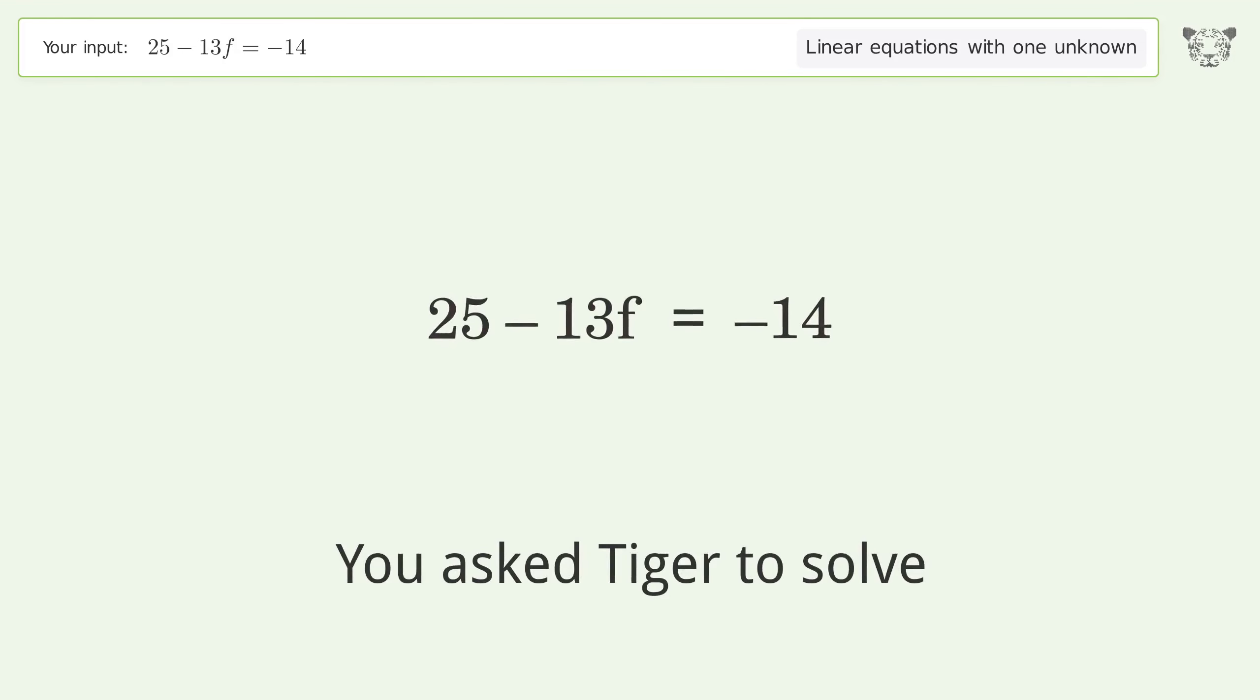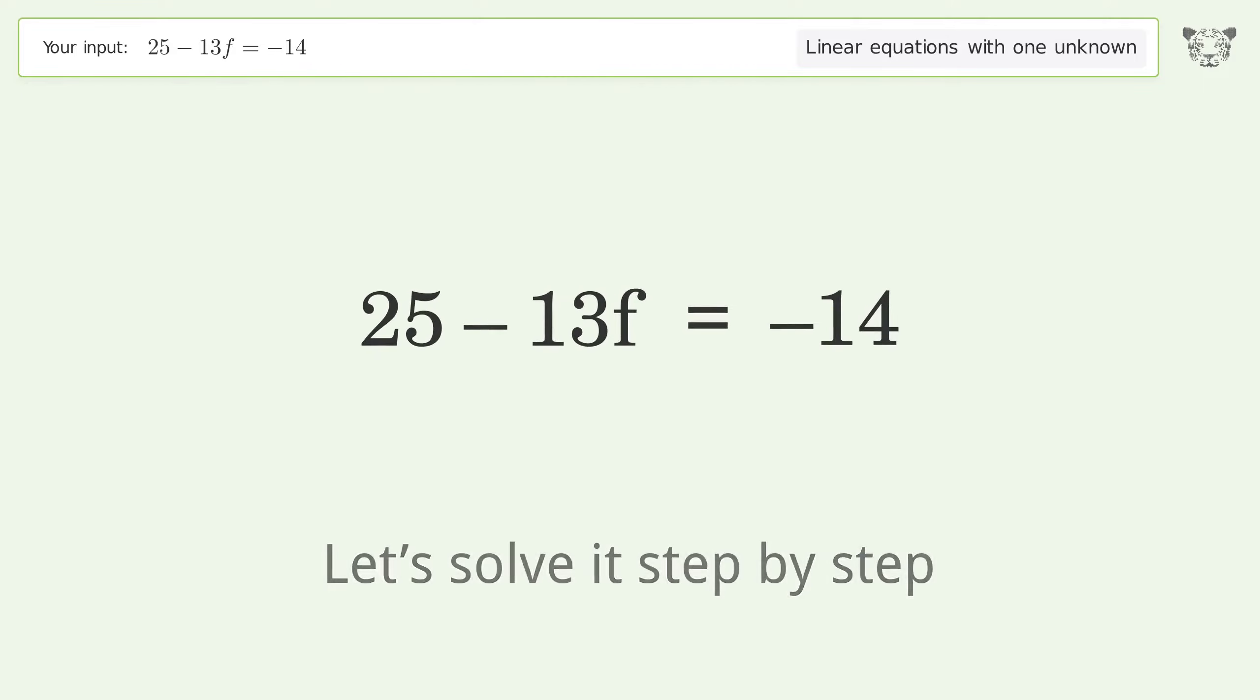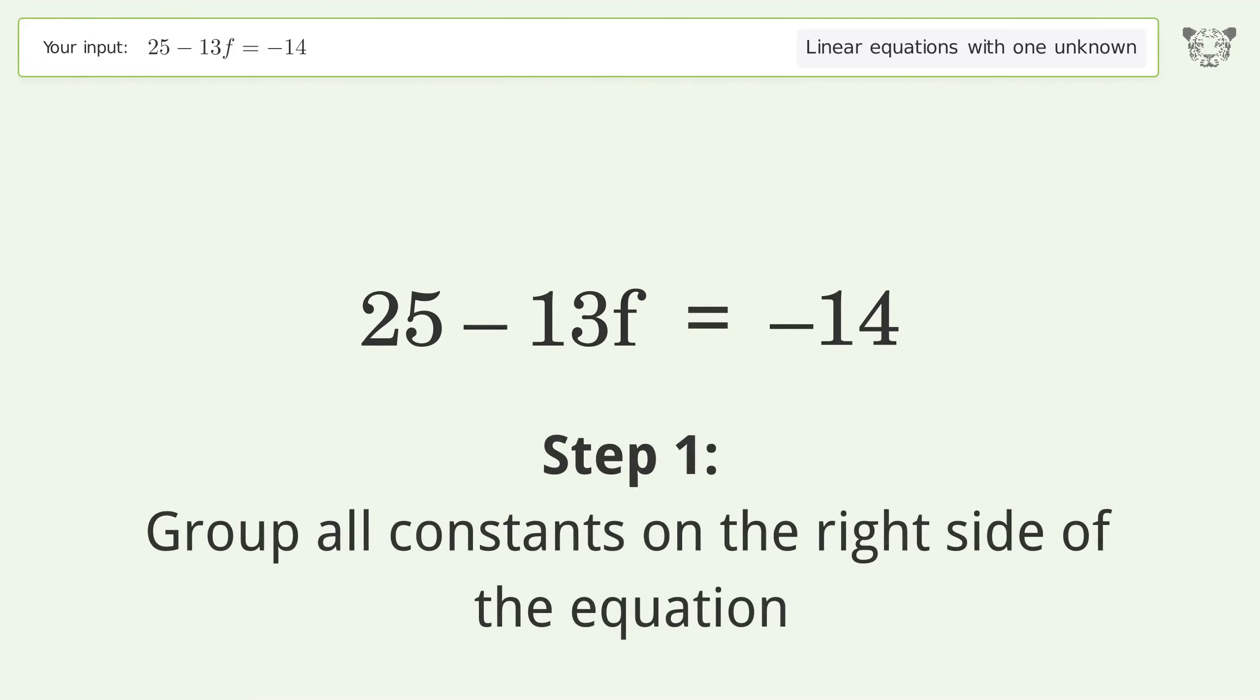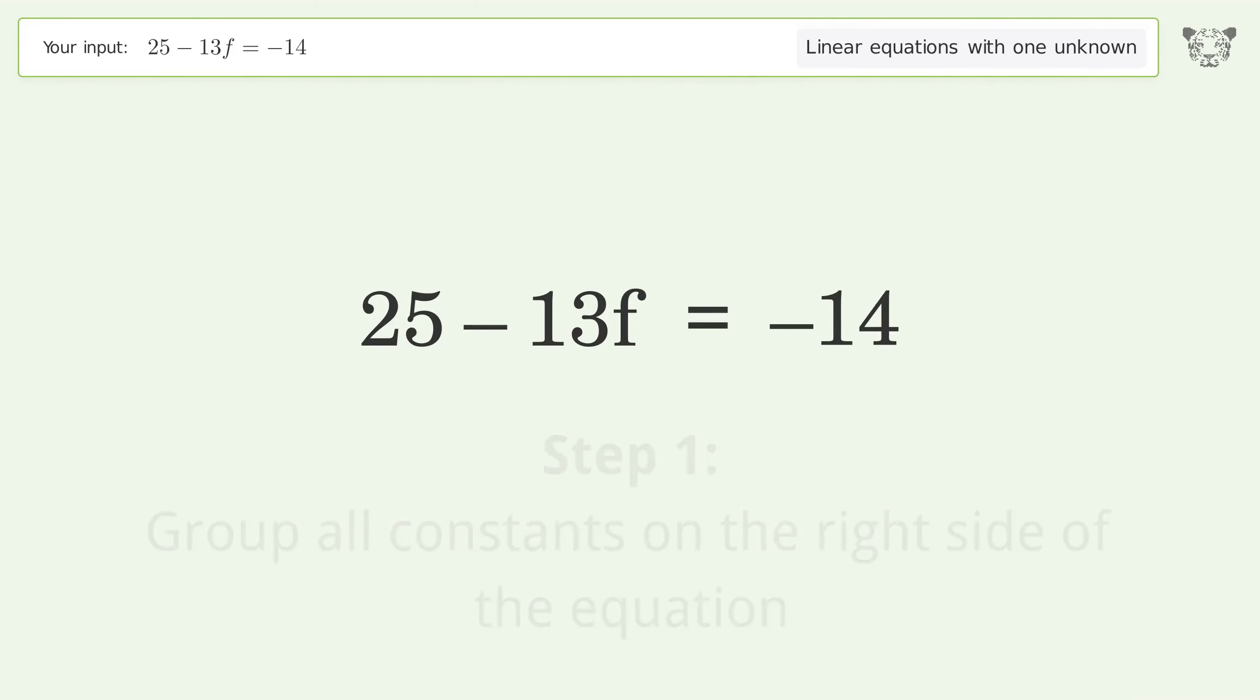You asked Tiger to solve this linear equation with one unknown. The final result is f equals 3. Let's solve it step by step. Group all constants on the right side of the equation by subtracting 25 from both sides.